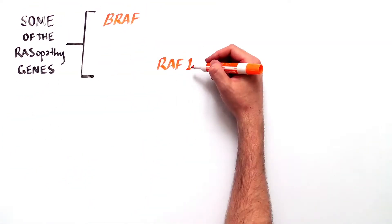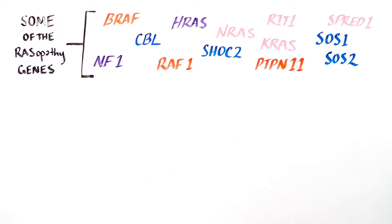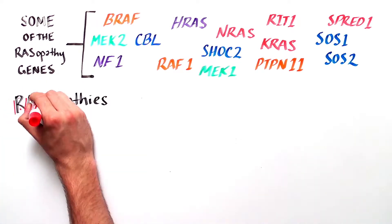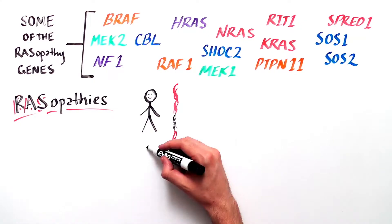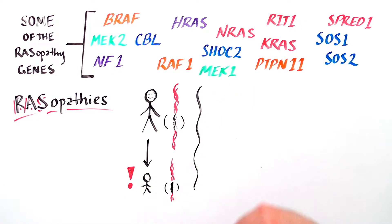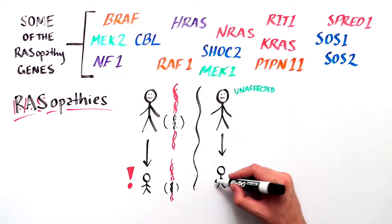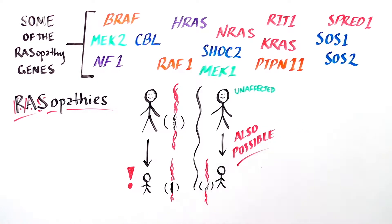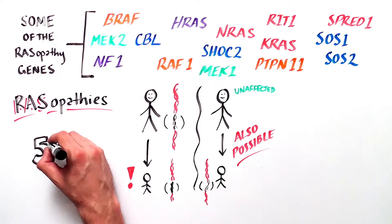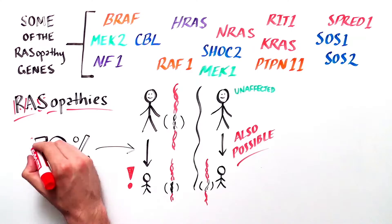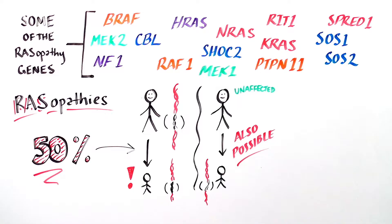Here are some of the known genes that can cause a RASopathy. RASopathies can be inherited from a parent who has the condition, or it can happen for the first time in a child without any other family history. If an individual has a RASopathy, they have a 50% chance of having a child with the same condition.